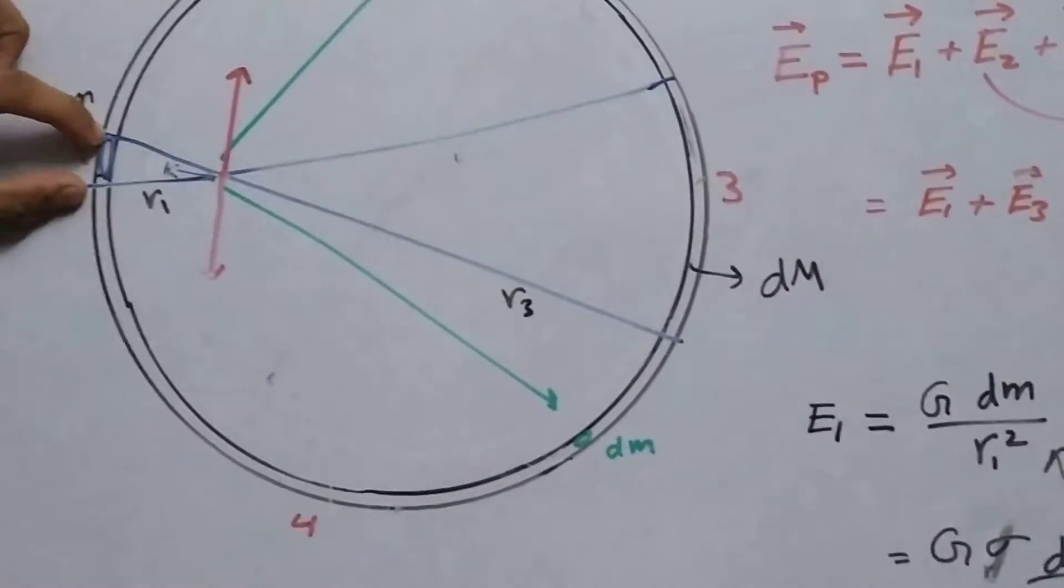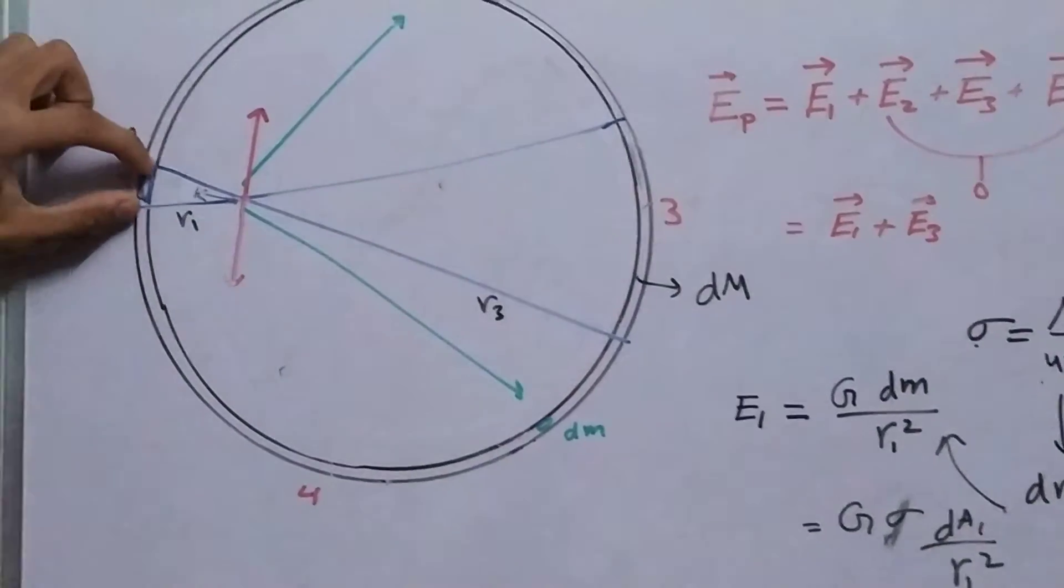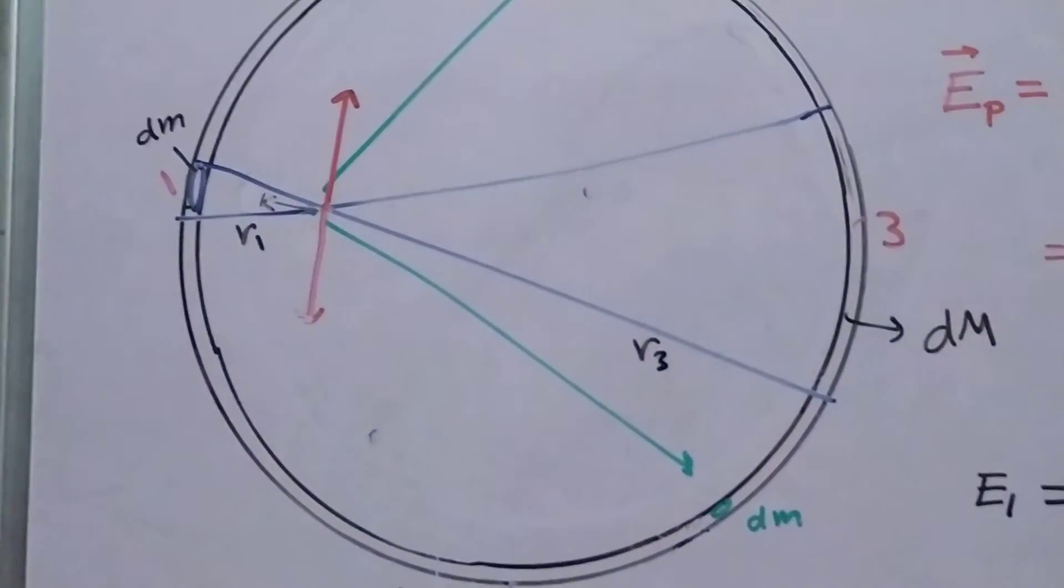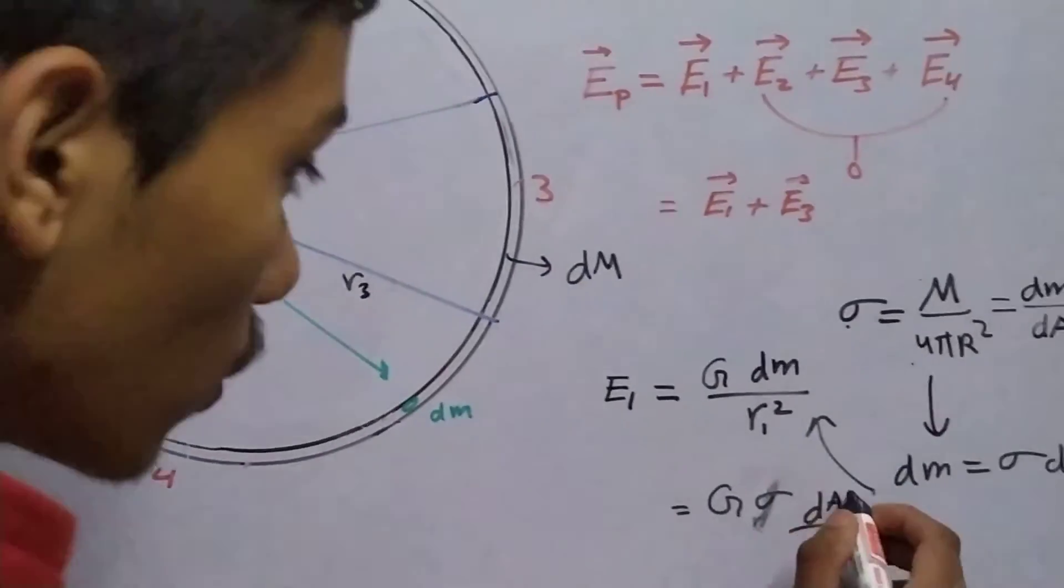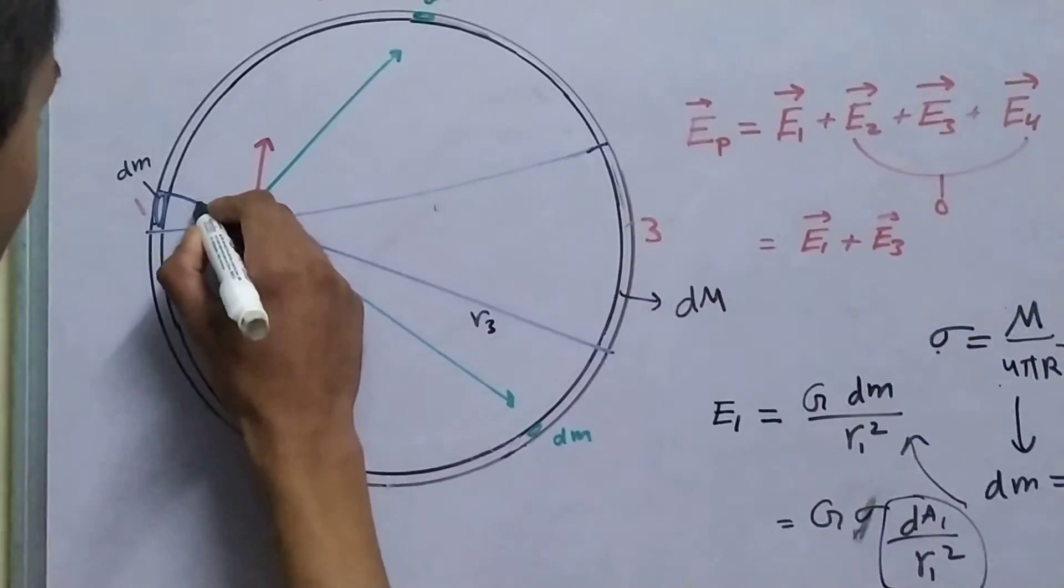This is your dA, let me write this down dA1, dA1 upon r1 square. Now, this quantity is known as the solid angle.